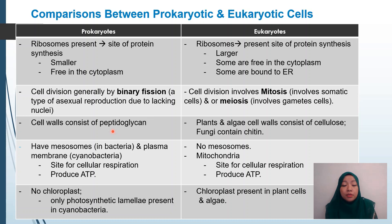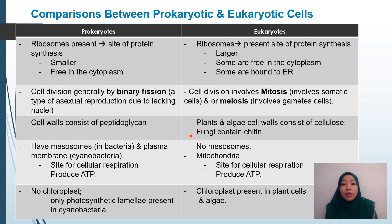Prokaryote cell division generally occurs by binary fission, which is a type of asexual reproduction. In eukaryotic cells, cell division occurs through mitosis in somatic cells and meiosis involving gamete cells. The cell wall of prokaryotes consists of peptidoglycan. However, for eukaryotes, in plant and algae cells they contain cellulose, while fungi contain chitin.